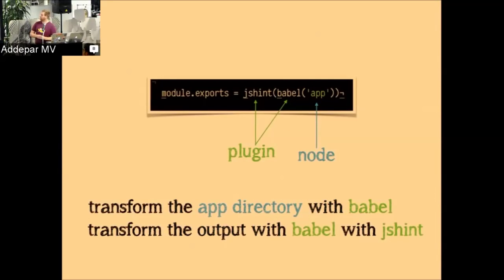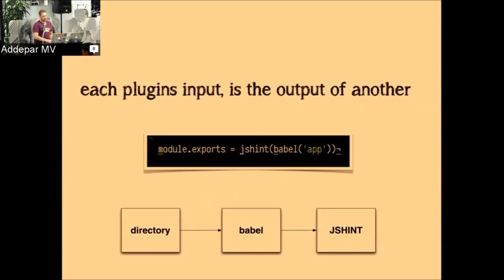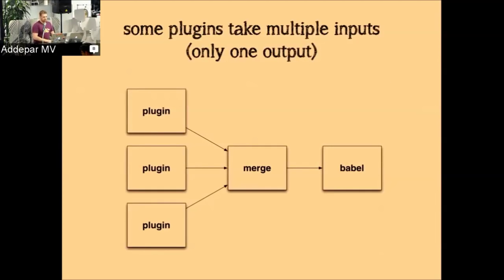We described the whole build pipeline without caring how Babel is implemented, how JSHint is implemented, or anything is implemented. Each plugin in Broccoli is essentially another layer of a layered file system. Since typical file systems don't support this, Broccoli emulates it via a series of directories and symlinks. We have three layers: the input layer (your app directory), the result of the Babel transformation, and the JSHint layer on top. Each plugin's input is the output of another plugin — it's like a linked list head to tail across all the plugins in your build pipeline.